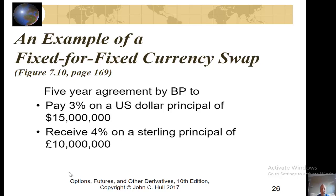So far we have looked at fixed-for-floating interest rate swaps in a given currency — dollars. Another type of commonly used swap is a fixed-for-fixed currency swap, where you are swapping British pounds for U.S. dollars. We have a five-year agreement by BP (British Petroleum) to pay 3% on a U.S. dollar principal of $15 million, and receive 4% on a sterling principal of 10 million pounds. These would be used, for example, to eliminate currency exchange rate risk.